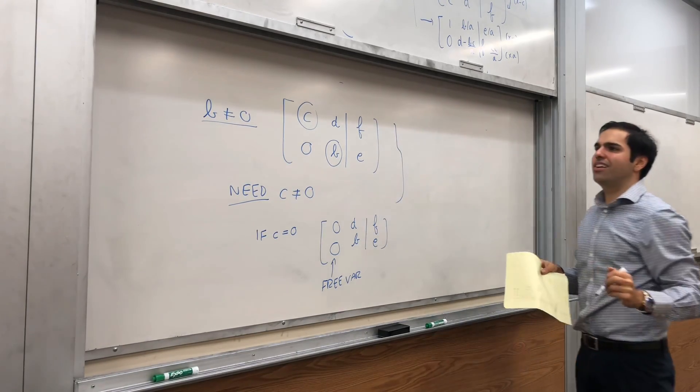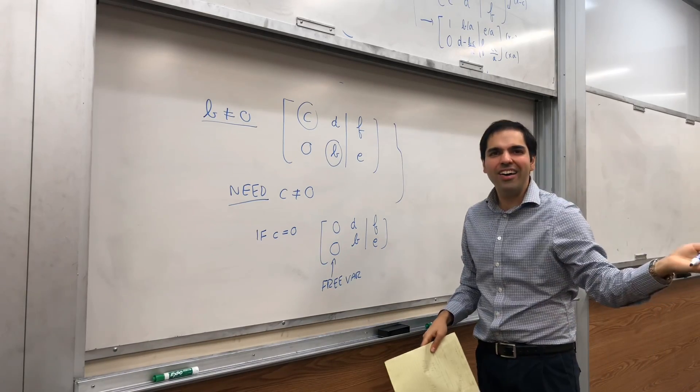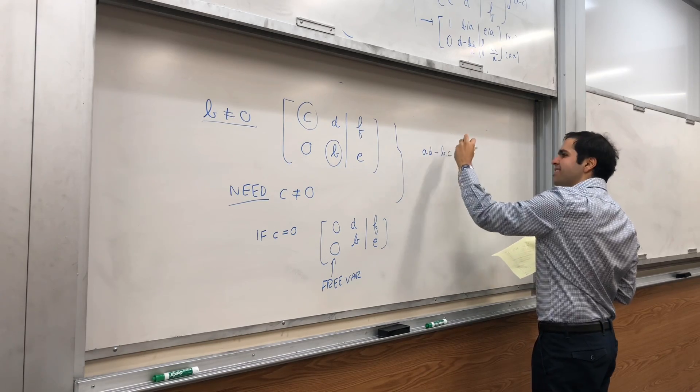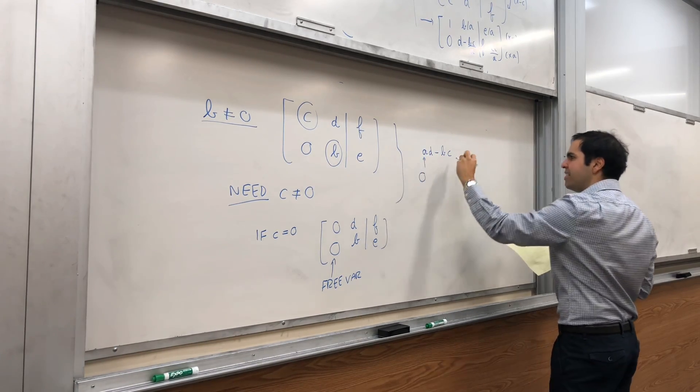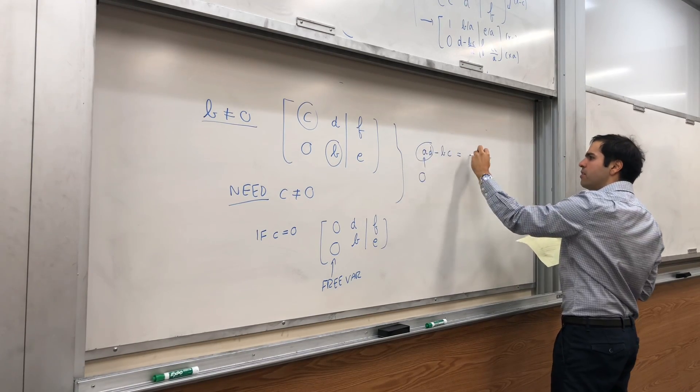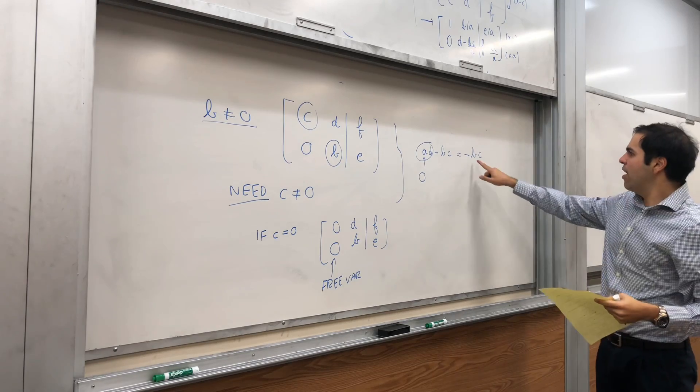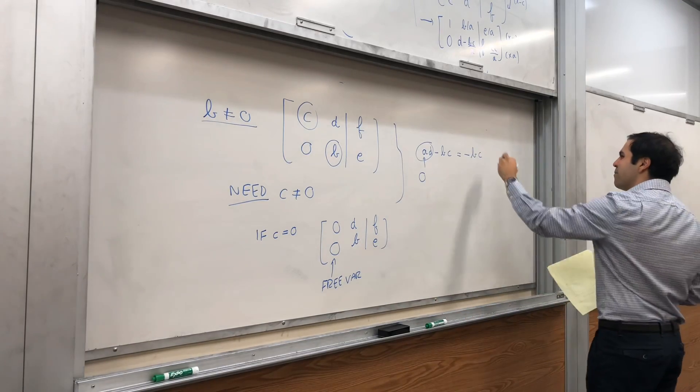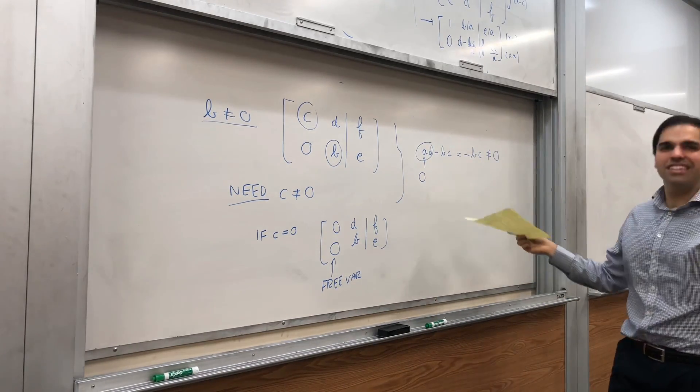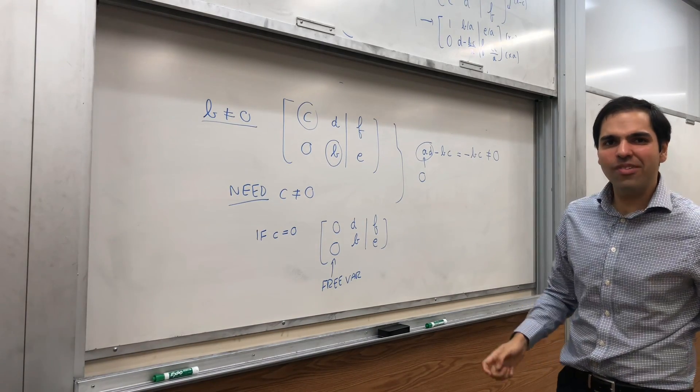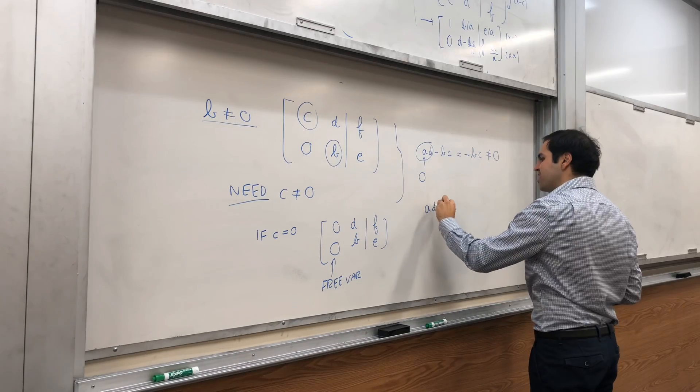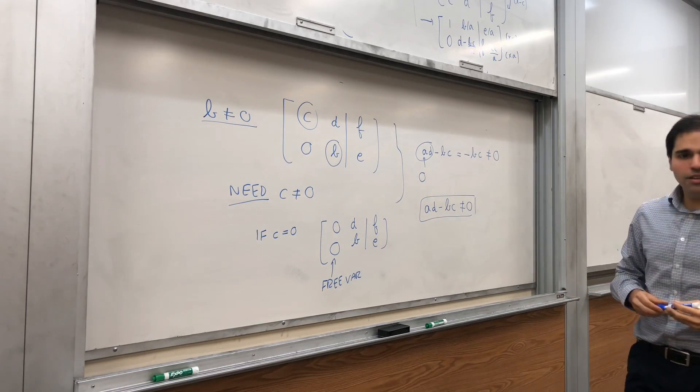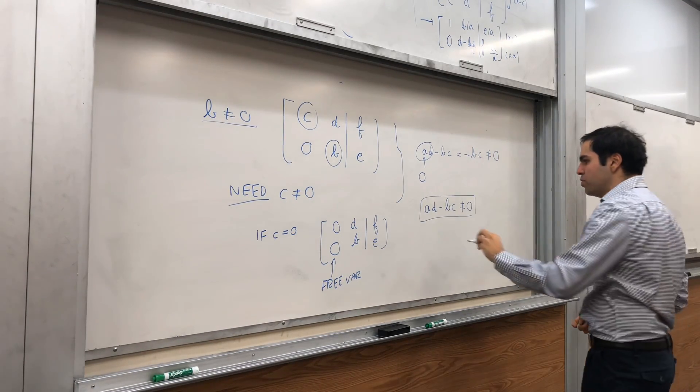We need c to be non-zero, but the cool thing is, it turns out, this is also a case we don't need to worry about, because then, AD minus BC, remember, a was 0 in case 2. Well, then this becomes 0, and we get minus BC. If b is non-zero, and c is non-zero, then the product is non-zero. So, we still get AD minus BC is non-zero, and therefore, our final condition is simply, AD minus BC is non-zero. And it turns out, in this case, you do have a unique solution.